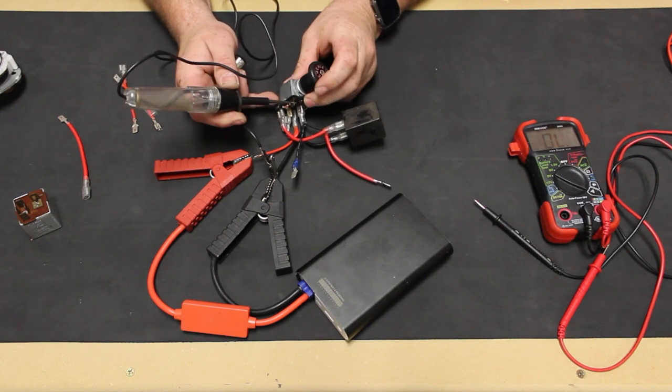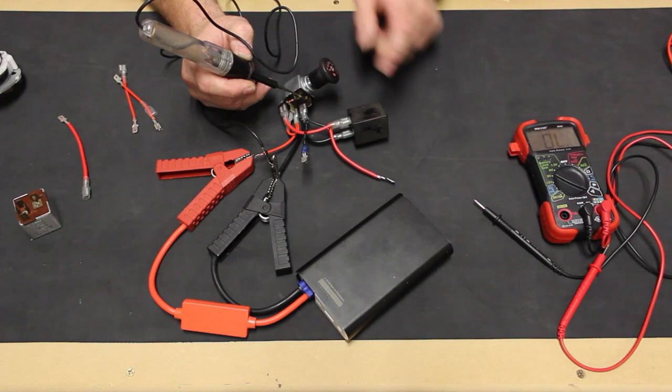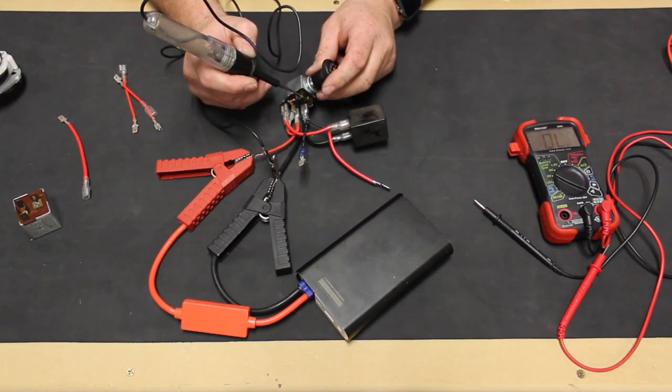This illustrates why a test light alone won't typically operate the flasher relay. Because our relay is a thermally operated relay, it needs a larger current draw to make it flash.